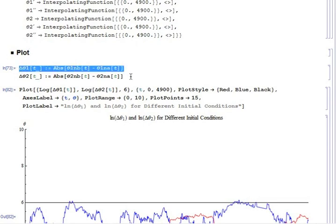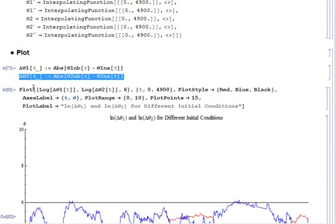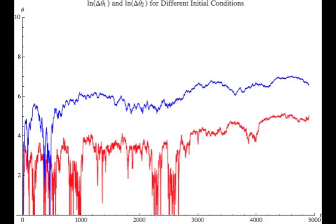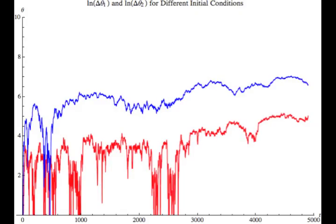And then taking the logarithm of each of those and plotting them as a function of time helps to show if the system is chaotic. So if you look at the plot I'm showing right now, you'll see that the log of delta theta 1 and the log of delta theta 2 both increase as a function of time.